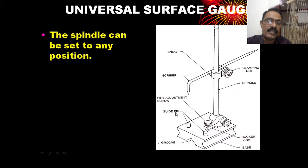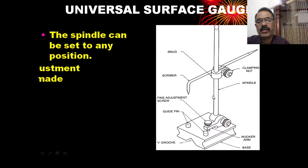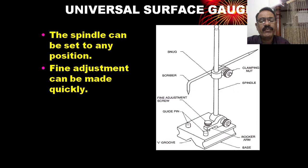The universal surface gauge has a guide pin, a fine adjustment screw, a rocker arm, a spindle clamping nut, and a scriber. Since you have a solid surface gauge on a spindle, the spindle can be set to any position.